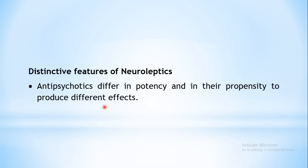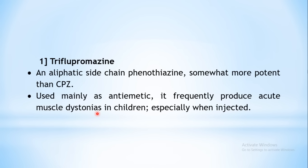Under the actions, we have seen many disadvantages — for example, endocrine changes take place. Those tendencies to produce various actions are a little different with different kinds of agents. Chlorpromazine belongs to the first class, that is phenothiazine.